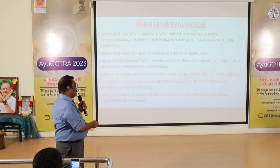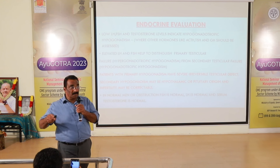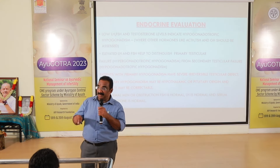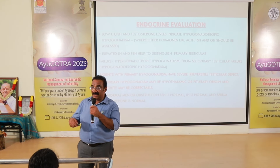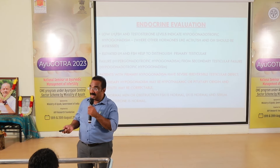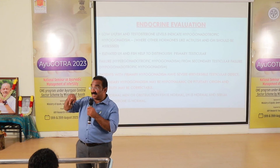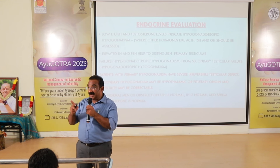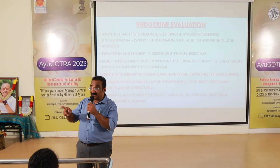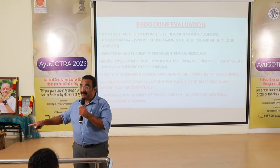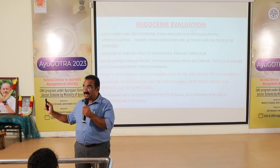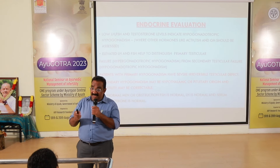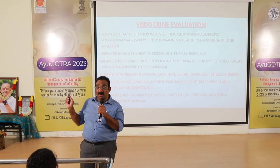In obstruction, LH and FSH are normal but there are no spermatozoa in the ejaculate, meaning there may be obstruction — because LH and FSH are normal. In normal men, LH, FSH, testosterone, and an adequate amount of spermatozoa are anticipated. But if LH, FSH, and testosterone are all normal with no spermatozoa seen, it indicates obstruction.